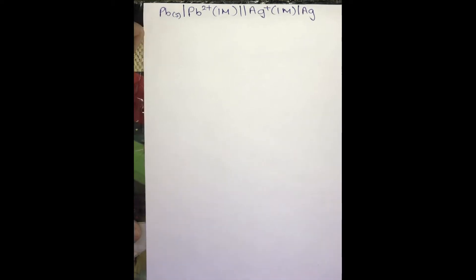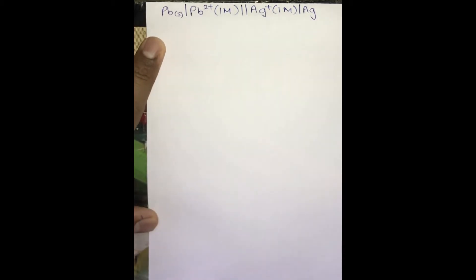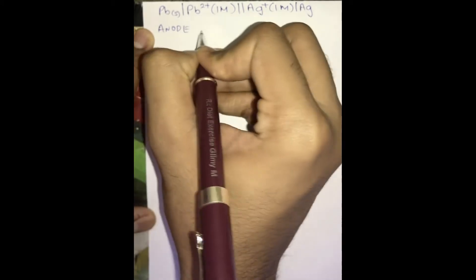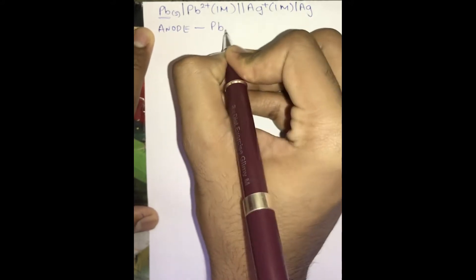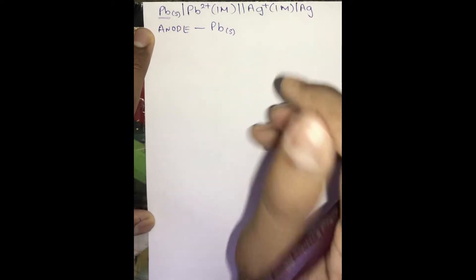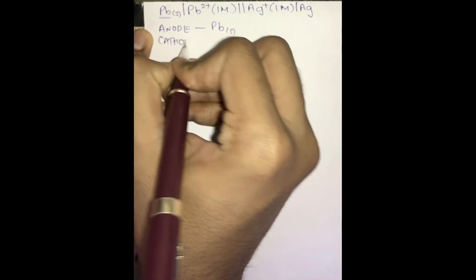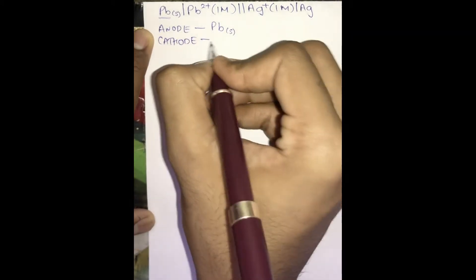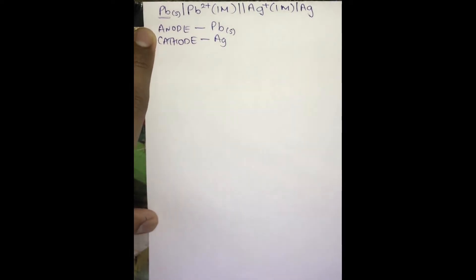So let's start with the topic. Suppose this is the formulation of a cell which is given to us. As we all know, the galvanic cell is represented in this manner. Following the rules of representation of a cell, the leftmost side metal present is our anode — that is Pb (lead) — written on the leftmost side. The one written on the rightmost side, Ag (silver), is acting as our cathode.